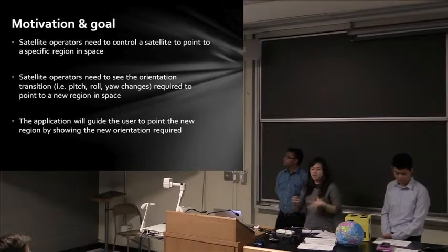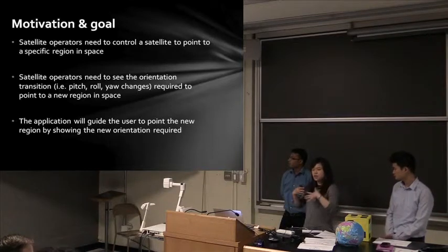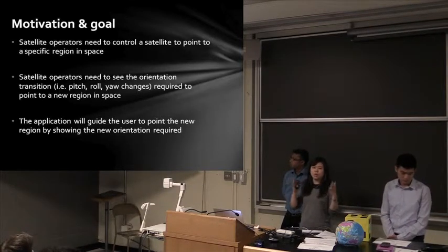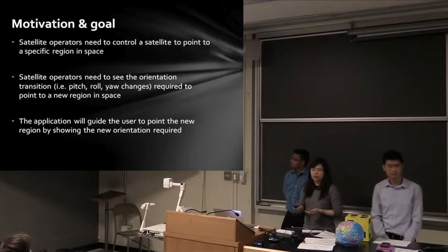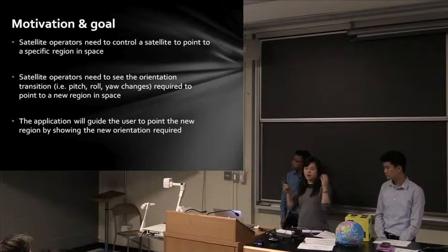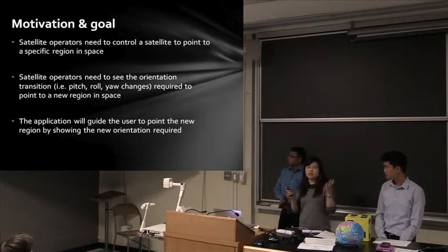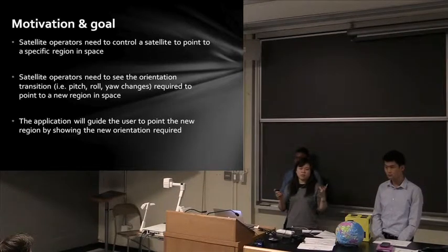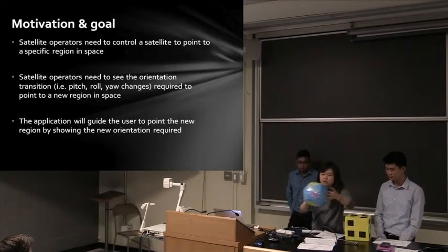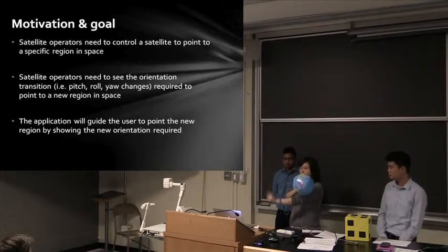I'm a satellite operator at Space Flight Laboratory at UofT. As a satellite operator, we control where the satellite is pointing in space. The current satellite I'm operating has a telescope on board and it observes stars. Sometimes we observe multiple targets in orbit — for example, we observe one star, and once it comes out of view we can observe another star on the other side.